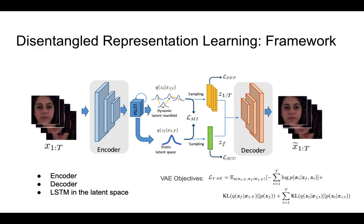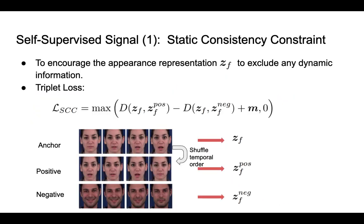We combine the VAE and RSTM for sequential data, where we sample dynamic and static variables separately. To make them disentangled, we propose three self-supervised signals.